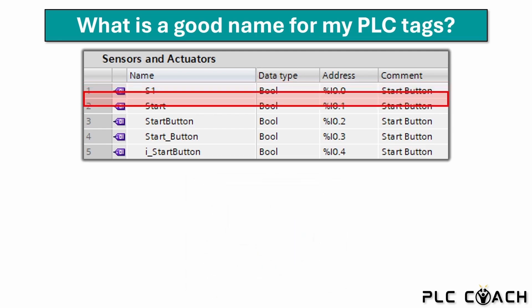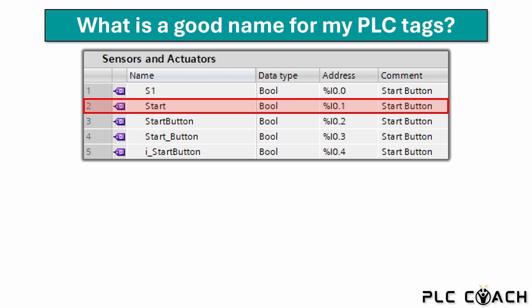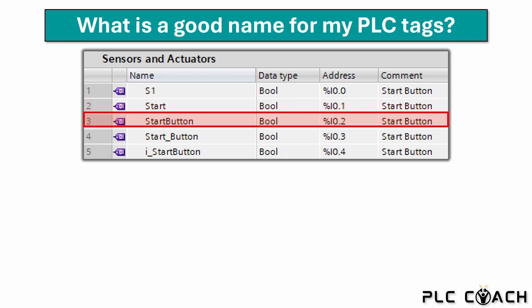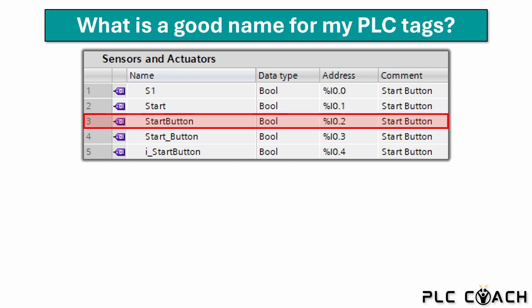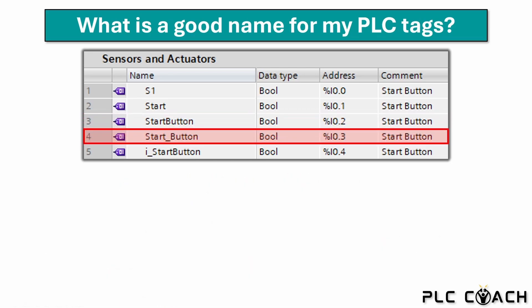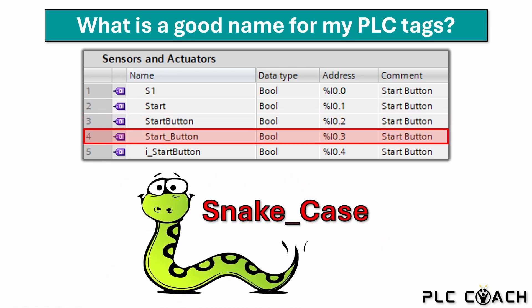The next PLC tag is better but still not perfect — it is not clear if it represents a button, a switch, or anything else. The TIA portal doesn't differentiate between uppercase and lowercase letters; however, using uppercase letters can make tags more readable. Please avoid using spaces in symbolic names. Instead, you can use CamelCase where the first letter of each word is capitalized, which makes the name easier to read. Another option is SnakeCase, where spaces are replaced with underscores — I personally find this style clear and easy to read, which is why we will be using it a lot in this course.